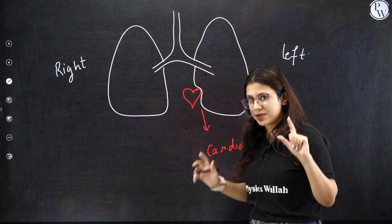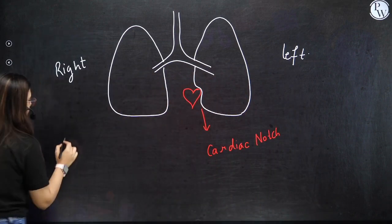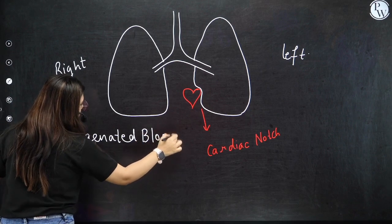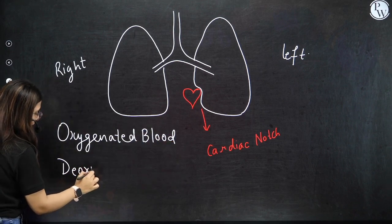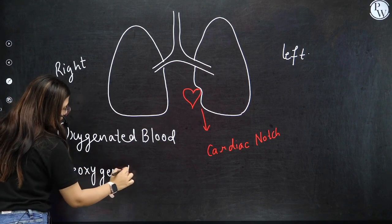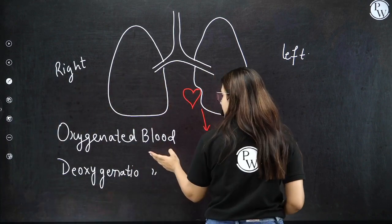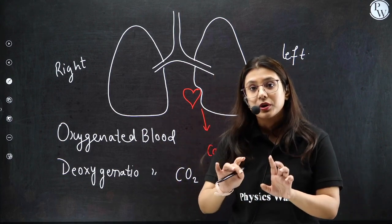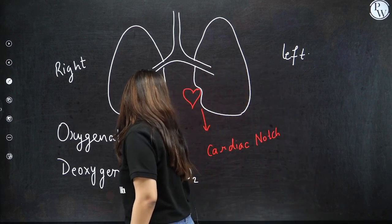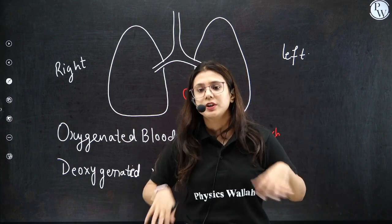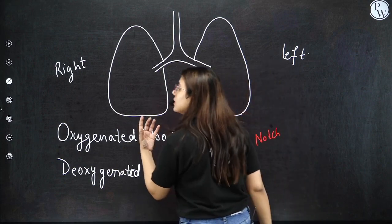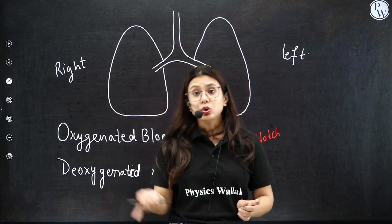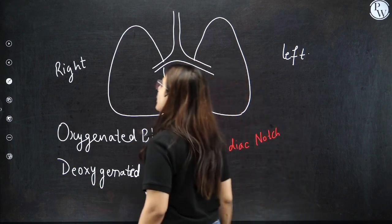There are two terms we are going to use: oxygenated blood and deoxygenated blood. Blood which has more oxygen concentration inside it is called oxygenated. Blood which has more carbon dioxide concentration, where carbon dioxide is more than oxygen, is called deoxygenated blood. Right now, both types of blood are flowing inside us. Before getting back to the structure of the heart, let us understand what are arteries, veins and capillaries.